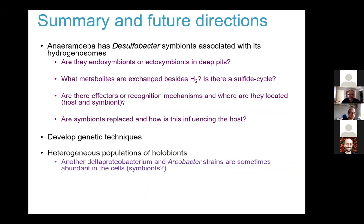We're also interested to investigate because we have seen some heterogeneous populations. In some cells there seem to be other Delta proteobacteria and potentially also Arcobacter strains that are labeled. So maybe there are different lineages of these cells, and it's not only the Desulfobacteria which is a possible symbiont.